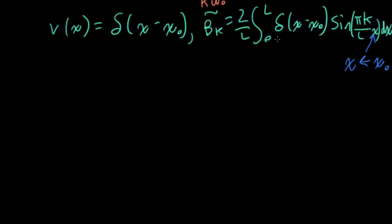And then I would have the integral of a delta function over a range that includes the delta function, and that would just give me one. So my beta k tilde is equal to 2 over l times sine pi k over l x naught.